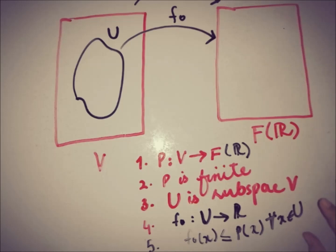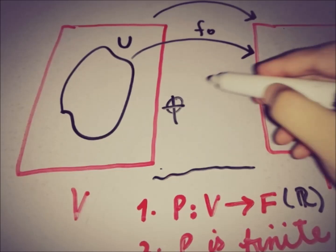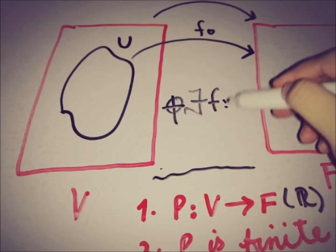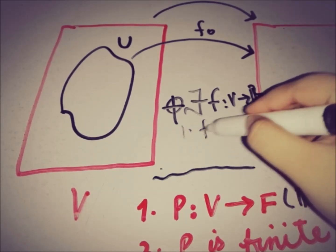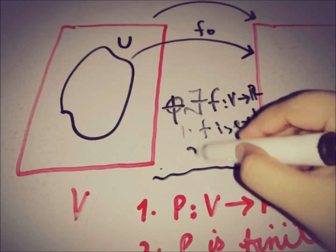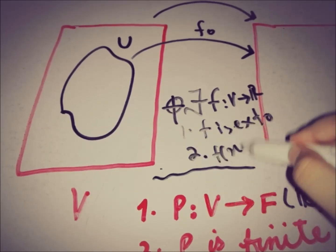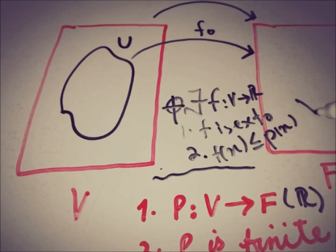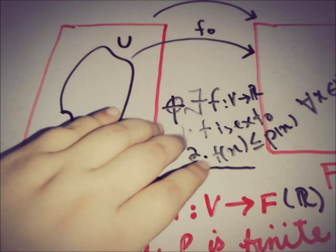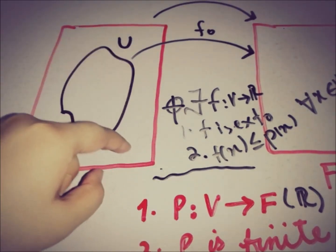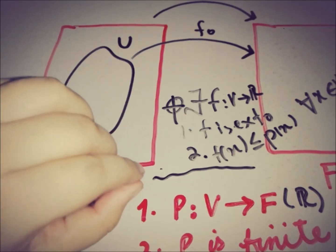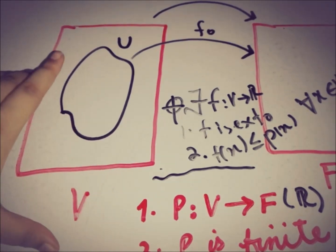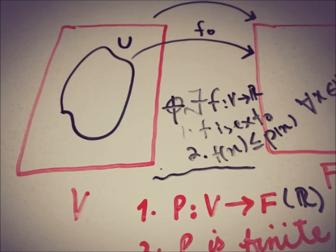If all of these conditions hold, then we can show that there exists a functional F from V to R such that F is the extension of F₀, and F(x) ≤ P(x) for all x in V. So this is the statement of the Hahn-Banach theorem — we will discuss the proof in the next video.